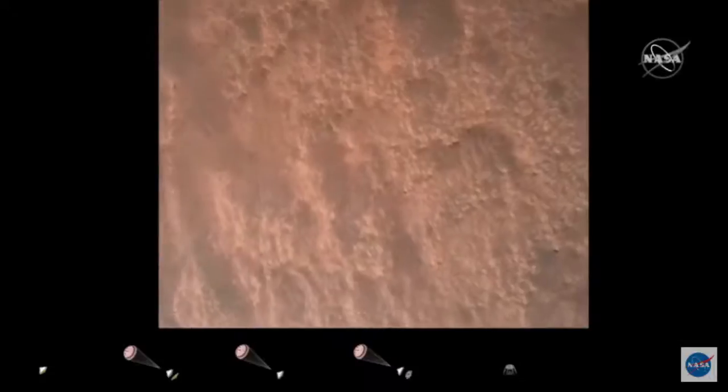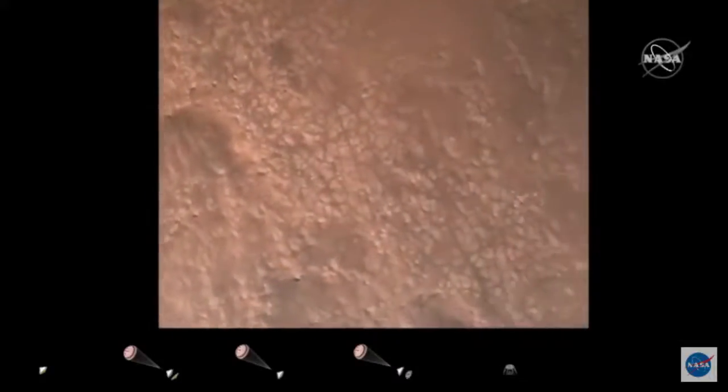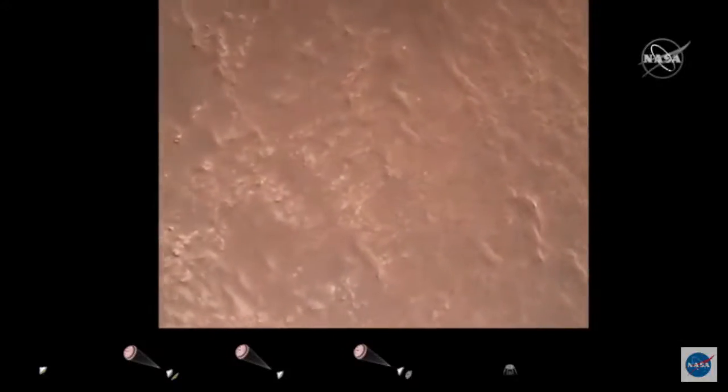We have completed our terrain relative navigation. Current speed is about 30 meters per second at an altitude of about 300 meters off the surface of Mars.